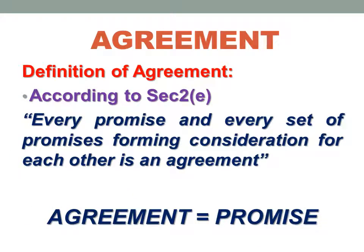Let's begin with the agreement. Agreement is a very common term which we use in our daily language. When somebody says agreement, what comes to mind is two people concurring upon a certain thing, both of them agreeing upon something. Section 2, subsection E defines agreement as every promise and every set of promises forming consideration for each other. That is known as an agreement.